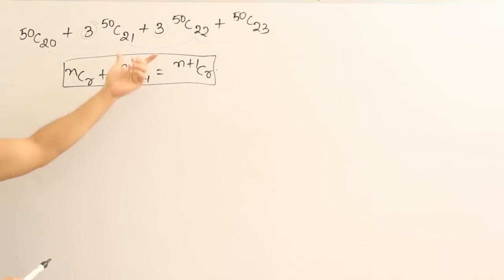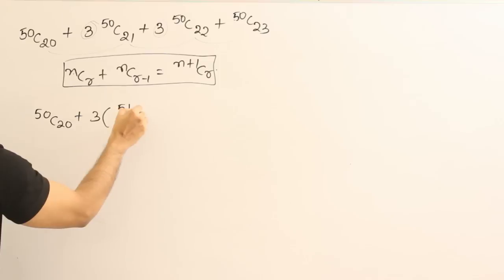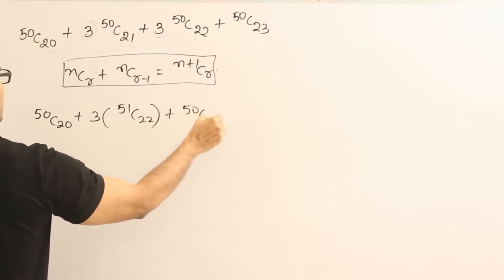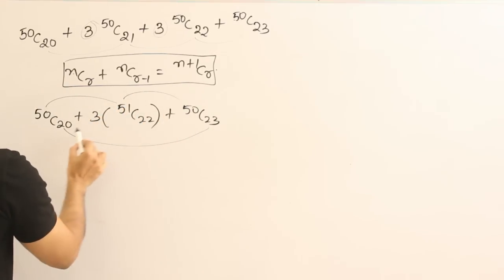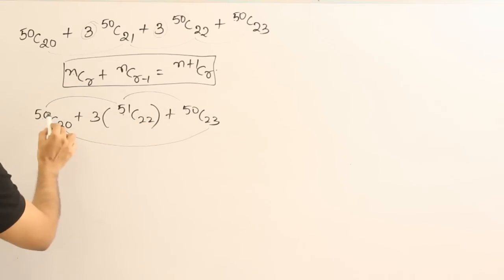What I mean to say is if you try to combine these two, just check this. What happens is 50C20 plus 3 into, if I try to combine these two, 51C22 plus 50C23. Now, these two cannot be combined or these two cannot be combined or these two cannot be combined because they are not differing by 1. Are you getting this? N is not the same. Even though in these two terms n is same, here these two terms are not differing by 1. Therefore, I cannot combine further.